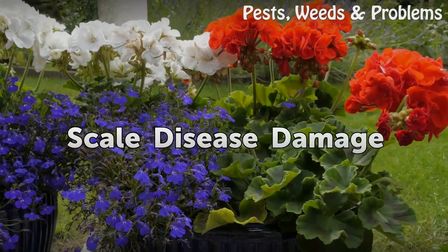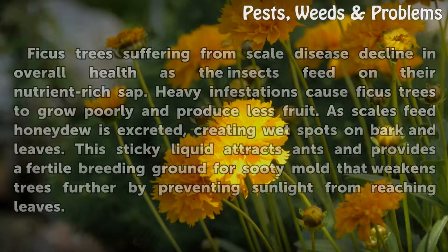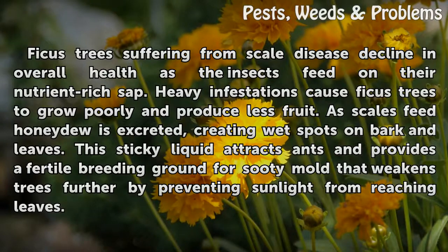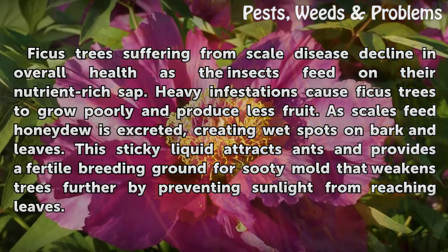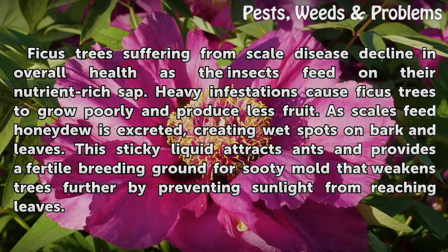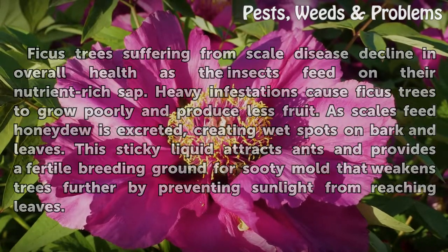Scale Disease Damage. Ficus trees suffering from scale disease decline in overall health as the insects feed on their nutrient-rich sap. Heavy infestations cause ficus trees to grow poorly and produce less fruit. As scales feed, honeydew is excreted, creating wet spots on bark and leaves. This sticky liquid attracts ants and provides a fertile breeding ground for sooty mold that weakens trees further by preventing sunlight from reaching leaves.